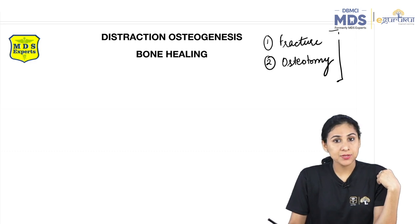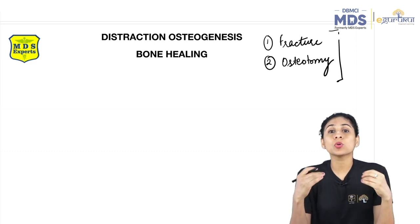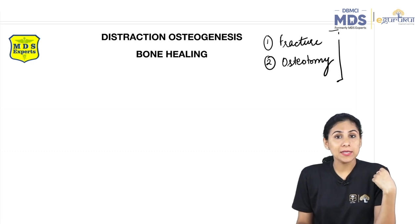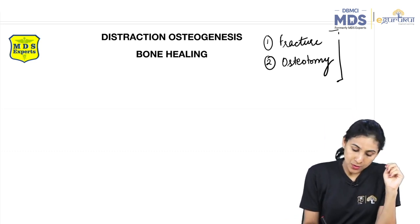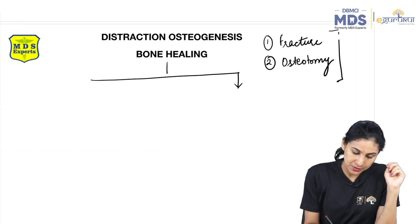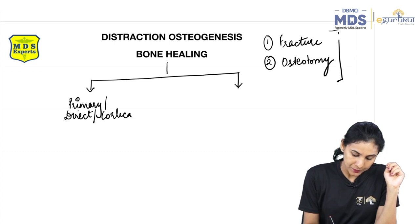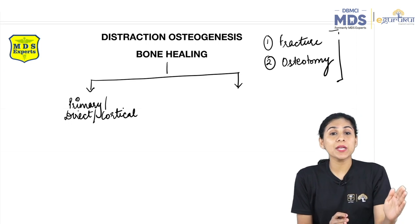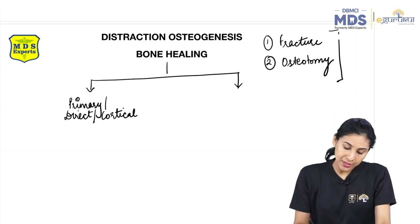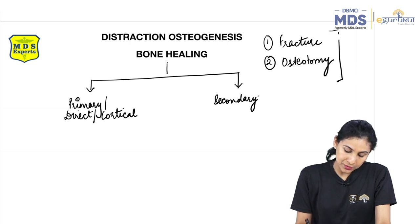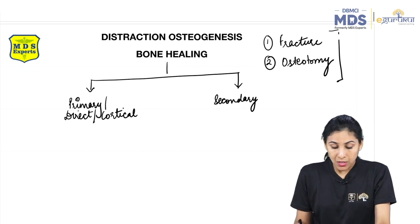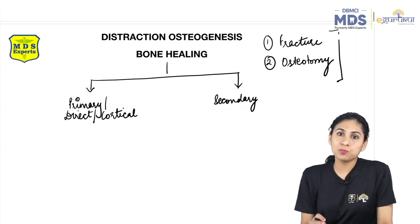In both these situations, the bone needs to heal. Bone healing happens by two means. First is the primary or direct or cortical healing. The second way is the secondary bone healing through callus formation. We will go into the depth of both types of bone healing.